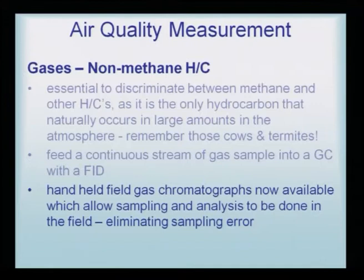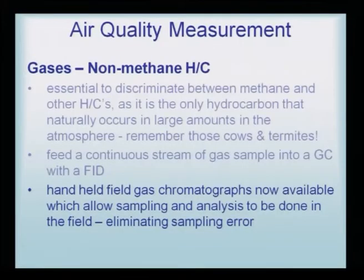Handheld field gas chromatographs are now available, which allow sampling and analysis to be done in the field, eliminating any sampling error. Because gaseous pollutants may be found in factory areas or certain locations, very handy gas chromatographs can be taken on site. These handheld field gas chromatographs allow sampling and analysis on the spot, so there is no error from sampling or contaminants entering the process.